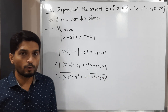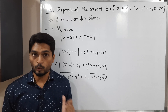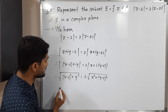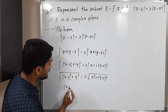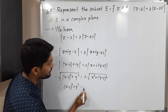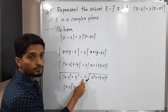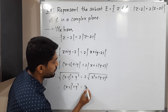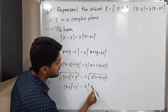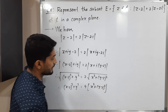We have a square root on both sides, so I will square both sides to remove the square root. Squaring on both sides, we will have: (X minus 2) squared plus Y squared on the left. On the right, when we take the square, the square root gets cancelled, giving 4 times (X squared plus (Y minus 2) squared).